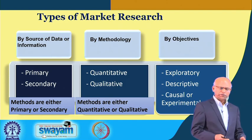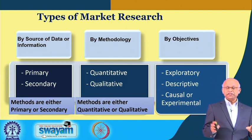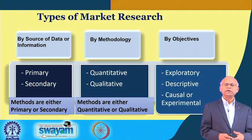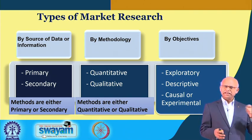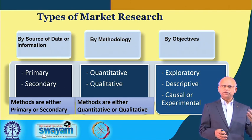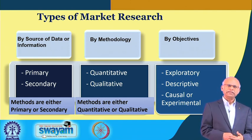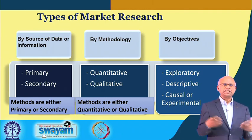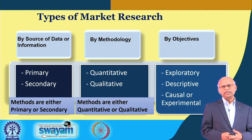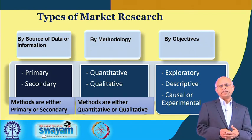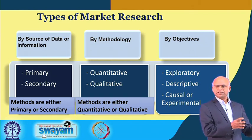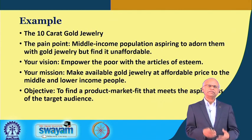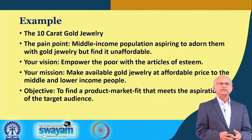From the previous slides, there are three separate methods: by source, by methodology, and by objective. Important to note that any method — say by source, you are using a primary method — but then primary should be either quantitative or qualitative; it can be exploratory, it can be descriptive, it can be causal. So they are all overlapping, meaning it is not mutually exclusive. Let us see how they are interconnected.